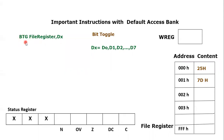The keyword is basically BTG, and after the keyword you will mention the file register, and then there is a Dx. Dx can be D0, D1, D2, D3, and up to D7. We know that every file register has eight bits, so basically we can toggle any of those bits.